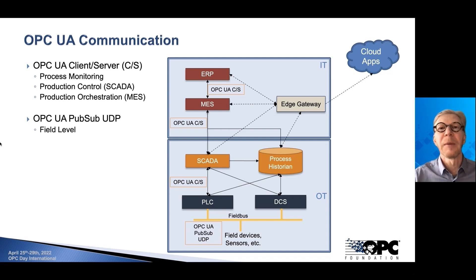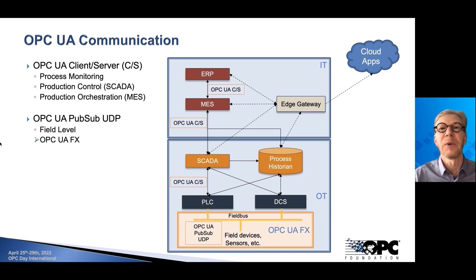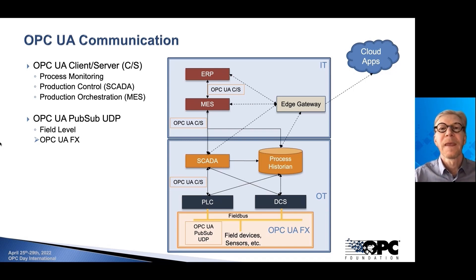Now we have a new PubSub flavor of OPC UA being introduced, with two different application areas. The first is the field level, where we have the new OPC UA Field Exchange specification that defines how it is combined with safety and motion control requirements, for example, and runs in a deterministic network. Here we have the PubSub UDP flavor providing this functionality — but remember, the client-server technology is still used in FX as well.